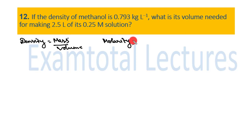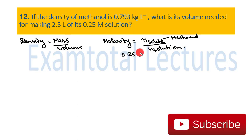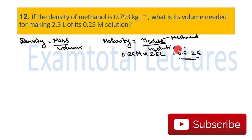To find the mass, we use the molarity formula: molarity = number of moles of solute / volume of solution in liters. The solute is methanol. So number of moles of methanol = molarity × volume = 0.25 M × 2.5 liters = 0.625 moles.